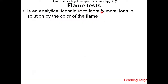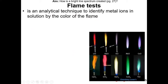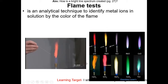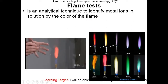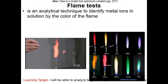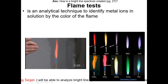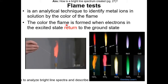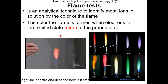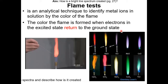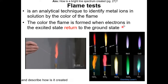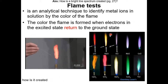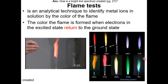Now we're going to talk about the flame test. It's an analytical technique used to identify metal ions based on the color of the flame. We will also do this experiment in lab. It basically works the same as the bright light spectrum and fireworks — the color of the flame is formed when electrons in the excited state return to the ground state, releasing energy and forming light. That light comes in different wavelengths, which is why it is a different color depending on the element.